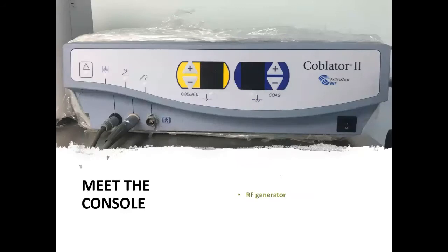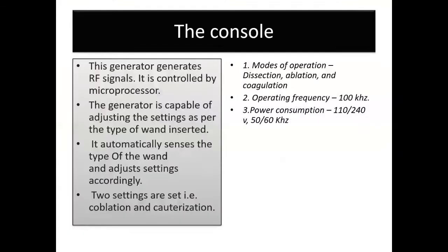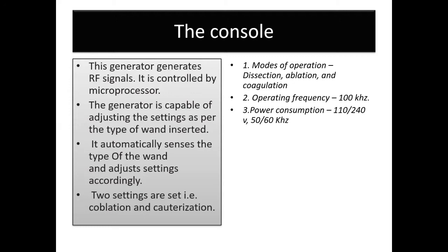The current generator is called the Coblator 2. The third generation was probably going to be released around the American Academy meeting but may be delayed. This is ultimately a radio frequency device with a microprocessor. The generator recognizes the wand inserted and automatically goes into the preset settings ideal for that particular wand. There are coblation and cauterization modes.